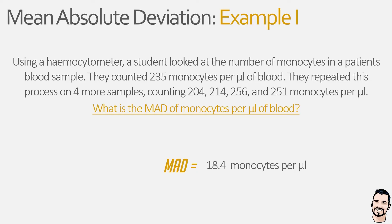A higher MAD value means the data is more variable — the data values are more spread out with larger differences between them. It's important to note that if we didn't use absolute values and remove negatives, a single large negative deviation could reduce the mean absolute deviation close to zero or even below it, falsely suggesting no deviation in the samples, which we know from the raw data would be incorrect.